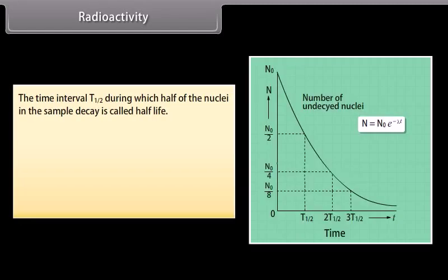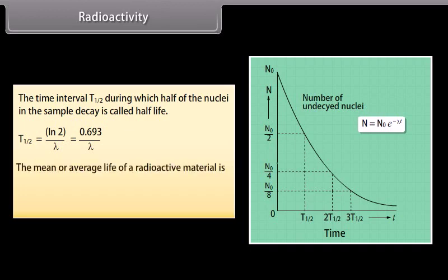The time interval T half during which half of the nuclei in the sample decay is called half-life. T half is equal to ln 2 by lambda, which is equal to 0.693 by lambda. The mean or average life of a radioactive material is tau, which is equal to 1 by lambda.